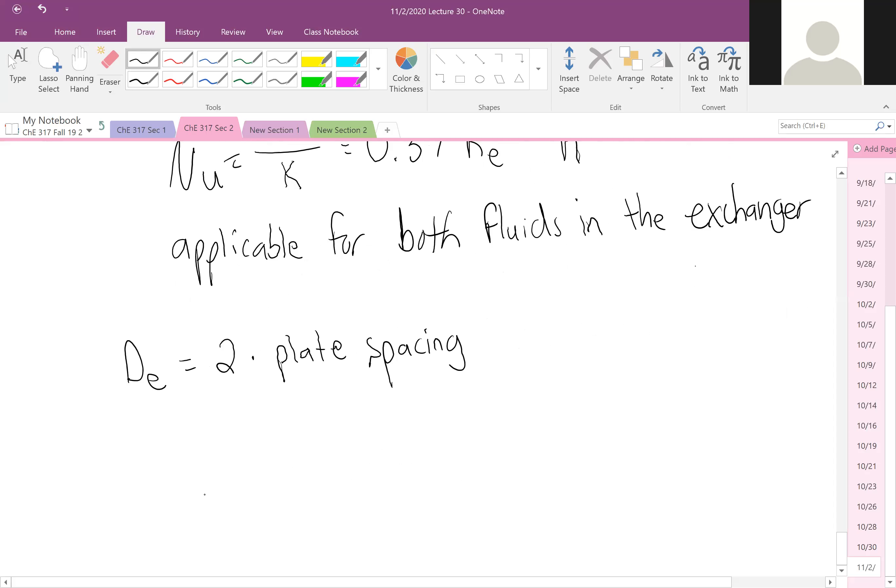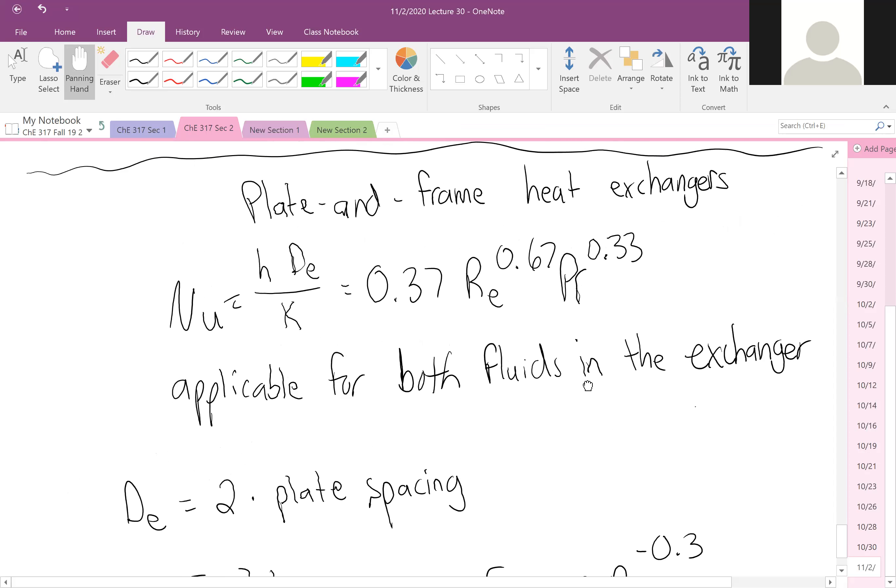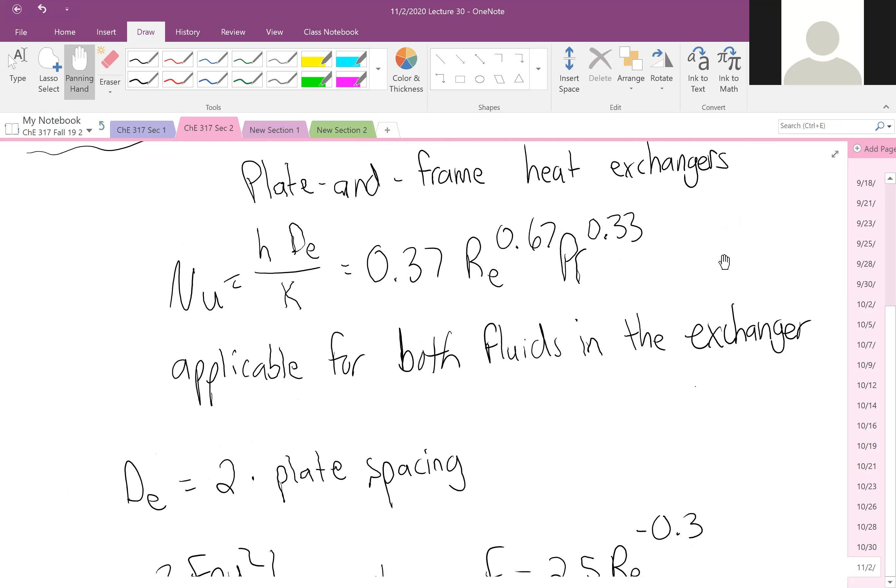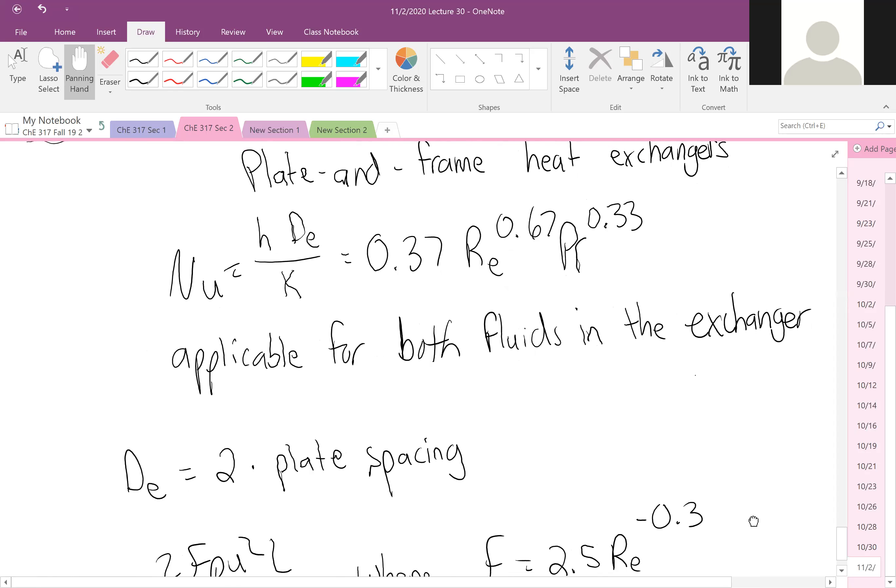However, the friction factor is calculated using an empirical relation, 2.5 times Reynolds to the negative 0.3. Any questions on plate and frame? They're really good alternative to shell and tubes for the right applications when you can. But the way it operates, it's pretty different than what we see in a shell and tube. All right, so we're a little low on time.